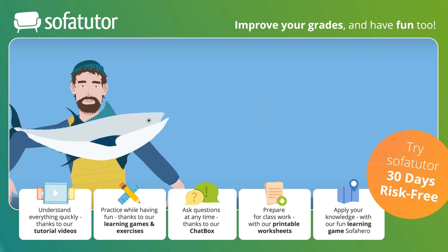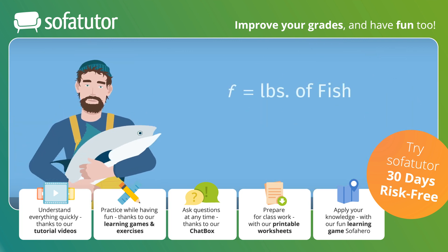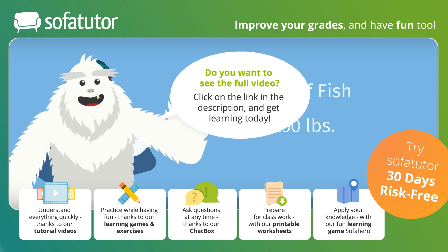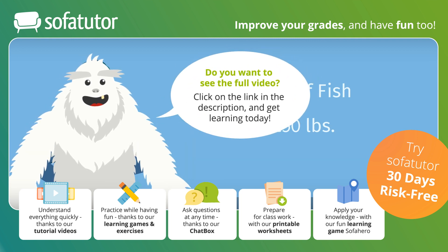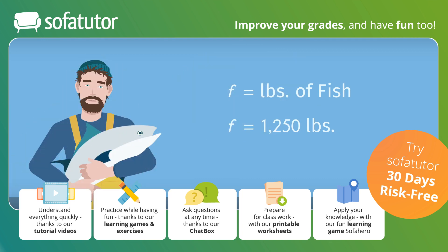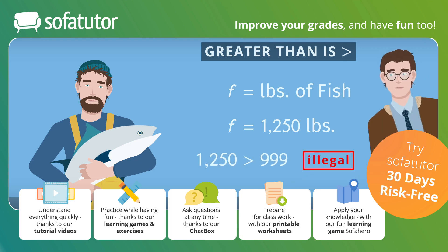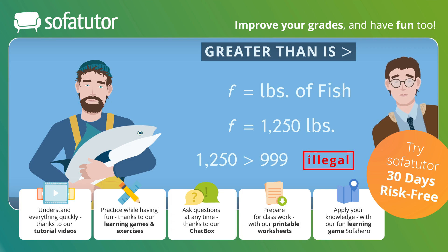In Skeeter's third month of fishing, he caught a bit more than 999 pounds of fish — 1,250 pounds to be exact. So how do we relate how much fish Skeeter caught in month 3 with the fishing regulations of 999 pounds of fish per month? If the number on the left is larger than the one on the right, we can relate the two numbers by using the greater than symbol. This symbol is similar to the less than symbol but points in the opposite direction. Poor Skeeter — since he overfished in the third month, he's got to pay a fine.